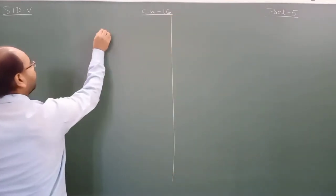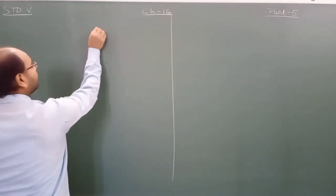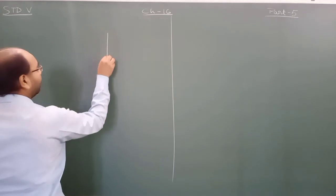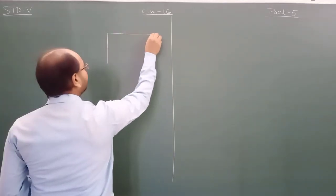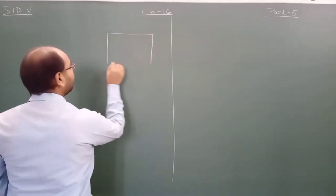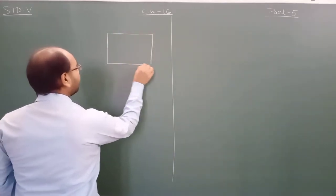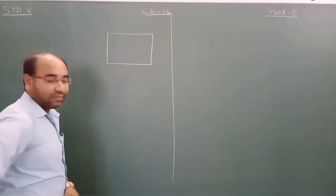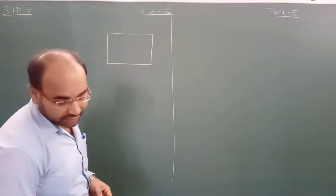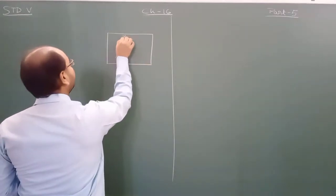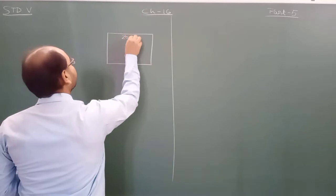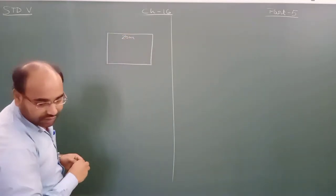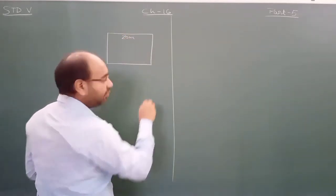This will form a figure. This is a hall whose length and breadth are given — it is 20 meter long and 15 meter wide.